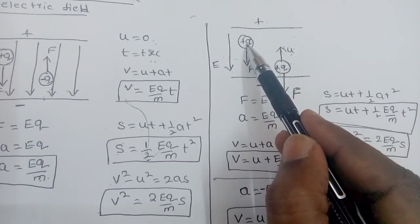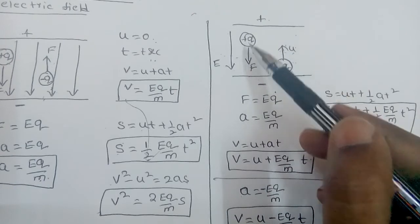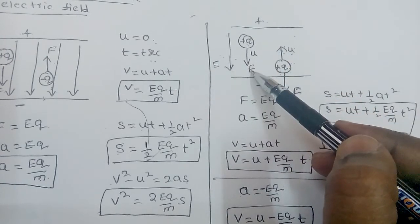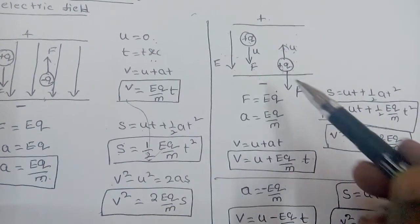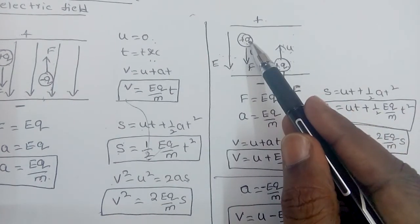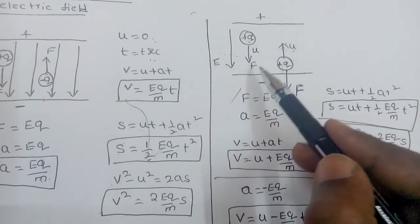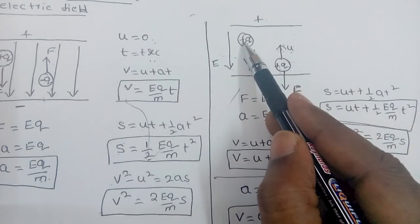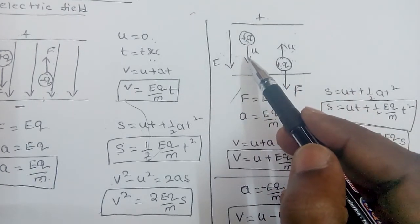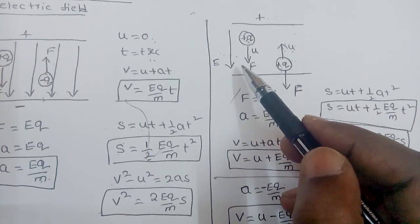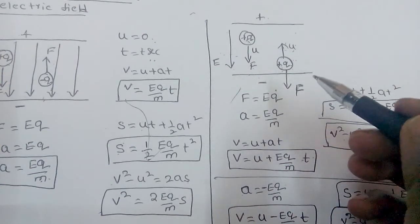This is for a positively charged particle. If we take a negatively charged particle entering the field in the direction of the electric field, then the acceleration will be in the reverse direction, so it gets retardation instead. This is the motion of a charged particle in an electric field.